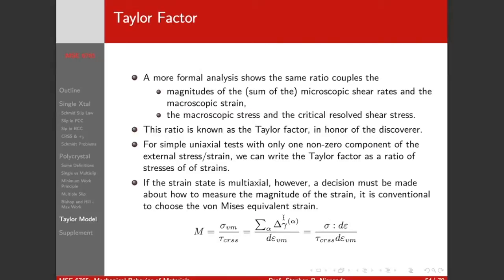If you dig into this deeper, there's a really important ratio that pops up called the Taylor factor. It is the ratio between the macroscopic stress and the critically resolved shear stress — the von Mises stress applied, the scalar stress divided by the critically resolved shear stress in the grain. It also relates the sum of all the shears in the slip system to the von Mises strain increment, or the macroscopic versus microscopic work. These are all measures of how easy a grain is to deform.